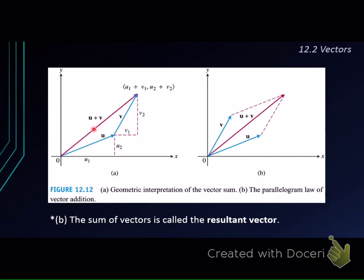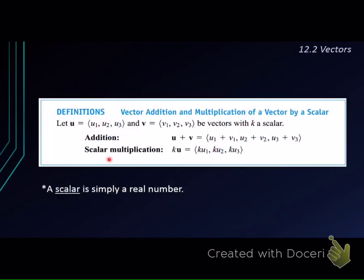Both vectors have the same direction, the same length, and the same initial and terminal points. This sum of vectors is also called the resultant vector. Now, how about scalar multiplication? When we take scalar multiplication, it means we take a vector u and multiply it with a scalar. In calculation, each of the components is multiplied with k. A scalar here is simply just a real number — it is not a vector.